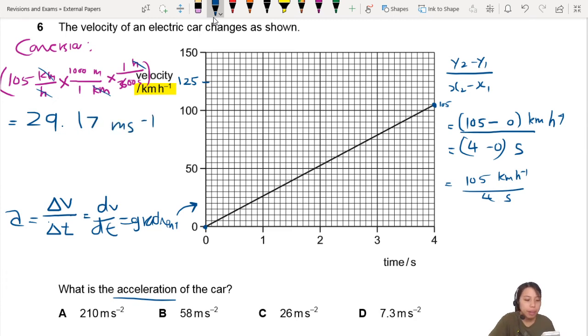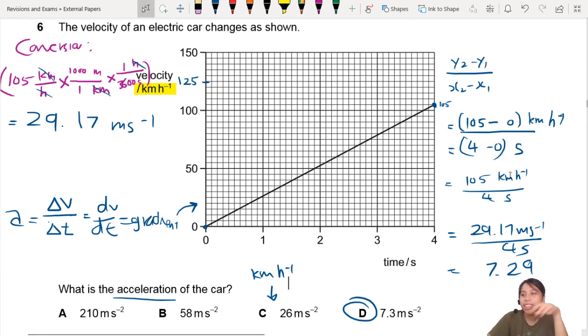So now we can divide by 4. 7.29. So I shall write it here again. Divide by that, and you get 7.29. Closest answer is here, 2SF. So this one is what you would get if you did not notice that it was in kmh. So be careful of the units. Check very, very carefully. Okay, next question.